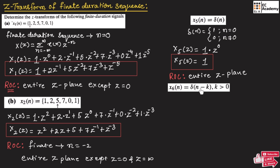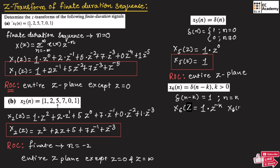Let us take the next problem: delta(n-k) for k>0. Delta(n-k) is delta(n) shifted right by k divisions. Substituting in the formula, X6(z) = 1 * z^(-k) = z^(-k). This is the Z-transform for delta(n-k), and the ROC is the entire Z-plane except Z=0.